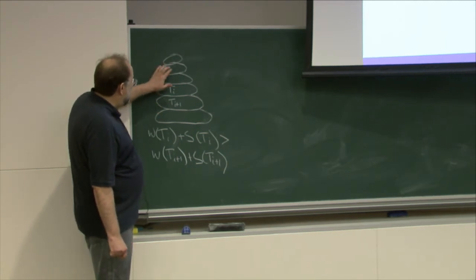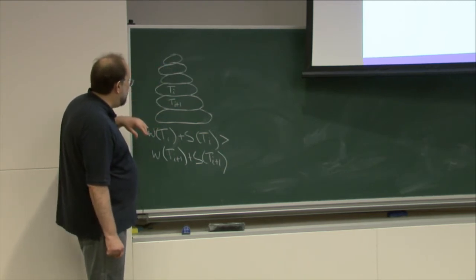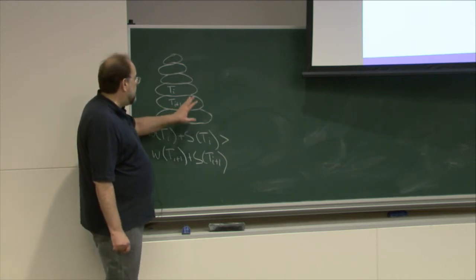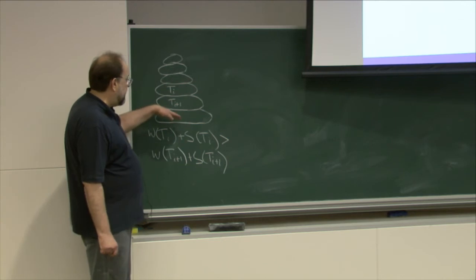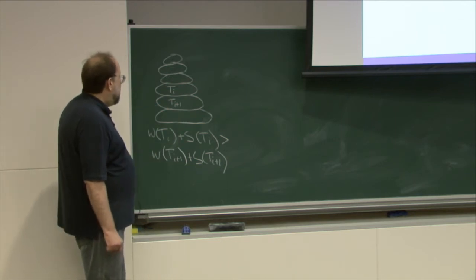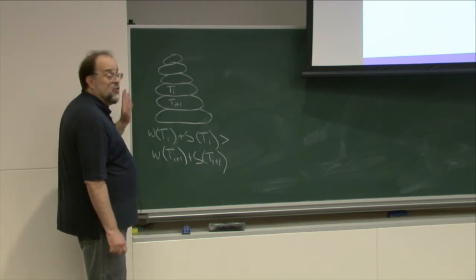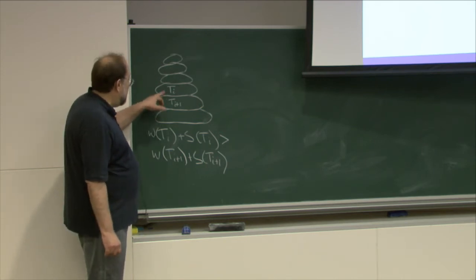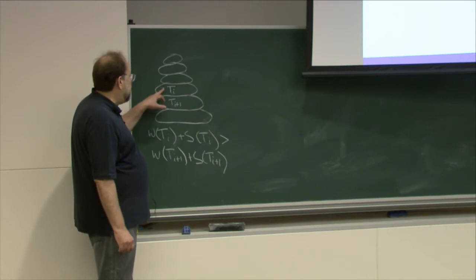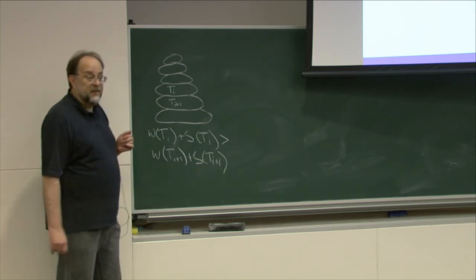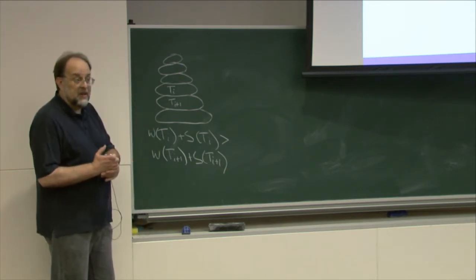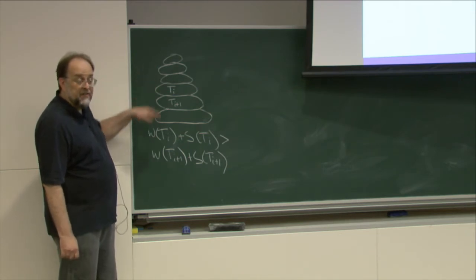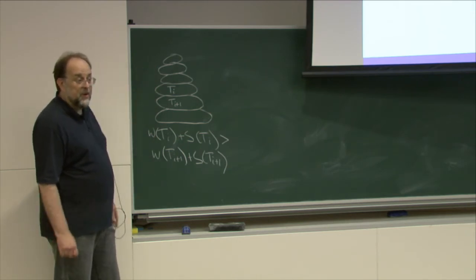For some turtle towards the top, its strength plus weight is larger than the strength plus weight of some turtle further down. If this happens, by the usual argument, we can always find two consecutive turtles that are inverted in the sense of that ordering. Then, essentially doing bubble sort, you can rectify the entire tower.